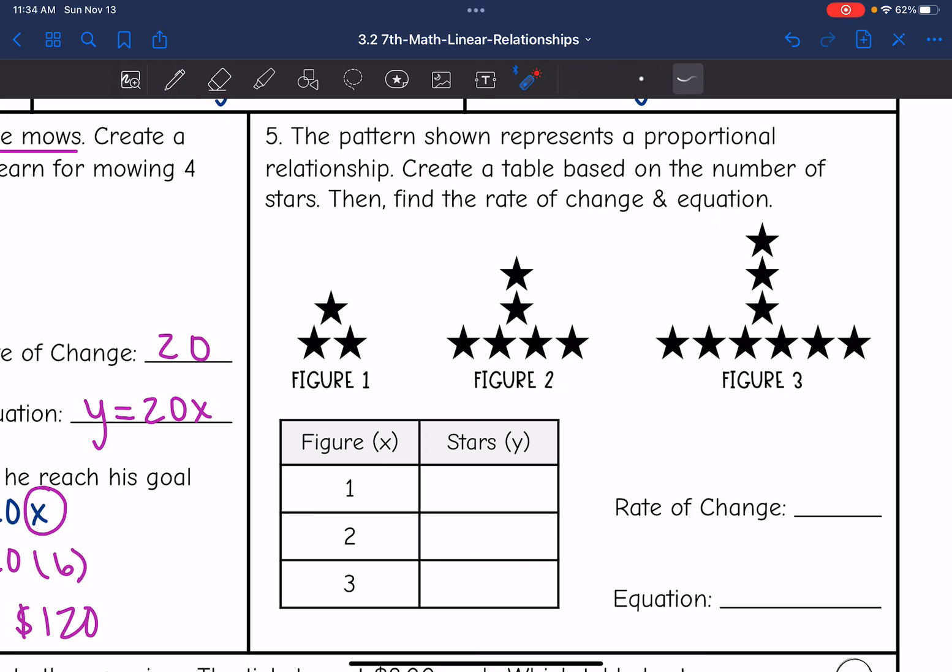The first figure has 3 stars. Then the second figure has 1, 2, 3, 4, 5, 6. And the last figure has 1, 2, 3, 4, 5, 6, 7, 8, 9 stars. So figure 1 has 3 stars, figure 2 has 6, and figure 3 has 9.